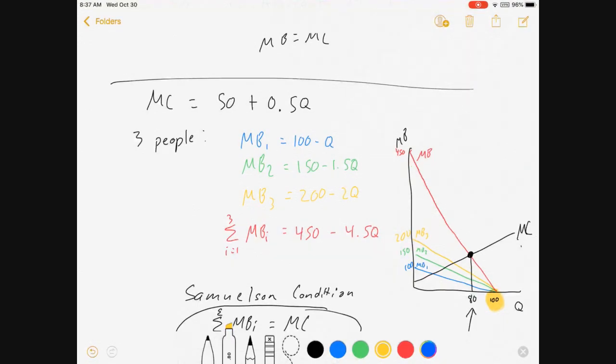If I had given them different horizontal intercepts, the math would have been messier because you'd have to have a kinked marginal benefit curve. That doesn't have much intuition. So I'm going to let you do that on your own if you need to.